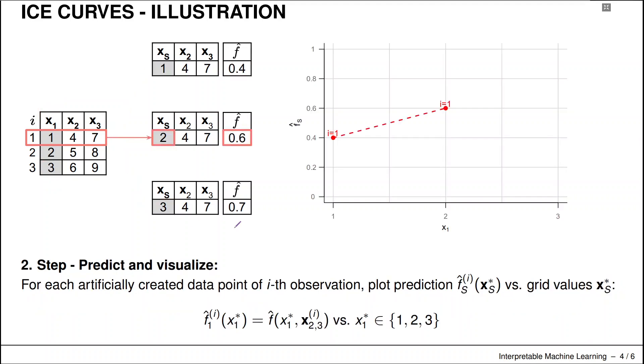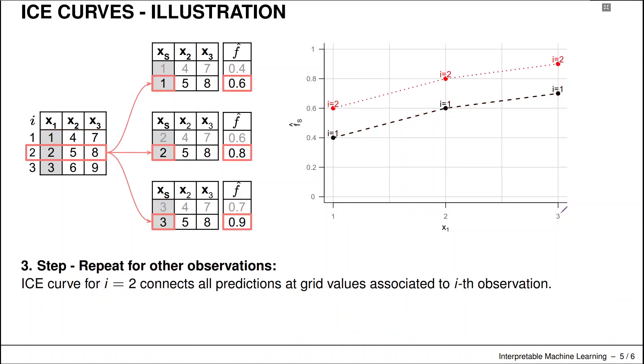That gives us these three ICE curve predictions at these three grid points. Now we do exactly the same for the second point, x⁽²⁾ here.